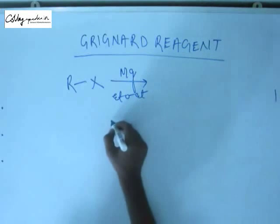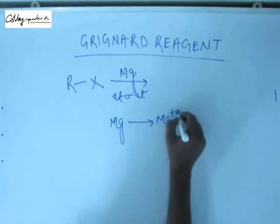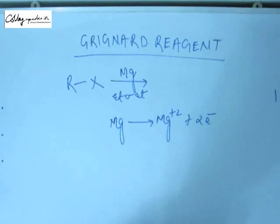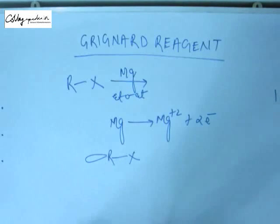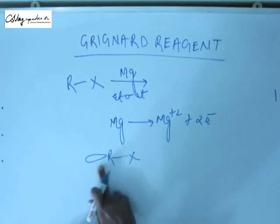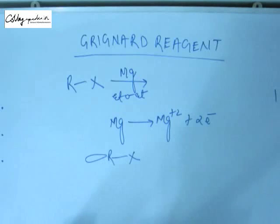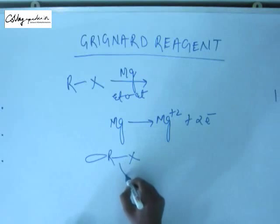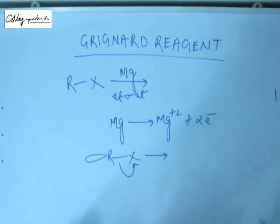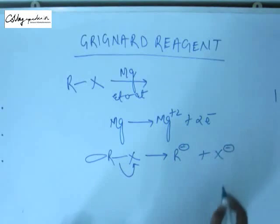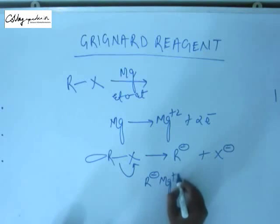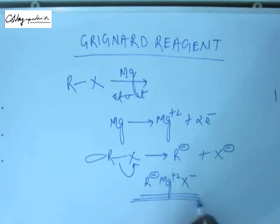Magnesium loses electrons — it forms a divalent ion releasing two electrons, and these two electrons are gained by the anti-bonding orbital of R-X. The bonding orbital of R has a corresponding anti-bonding orbital, and when these two electrons enter it, R has to lose its electron from the bonding orbital. So R leaves as R- and X-, both in ionic bonding attached to Mg²⁺. This gives us the Grignard reagent.